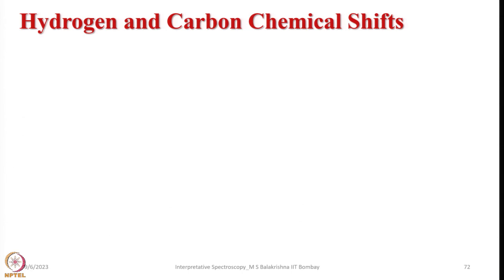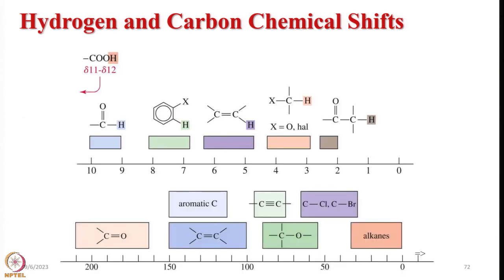Now let us look into hydrogen and carbon chemical shifts for better understanding. For comparison, I have given both 13C and 1H chemical shift ranges for the same functional groups. The aldehyde group and carbonyl group come around 9–10 ppm in 1H NMR whereas in 13C they come around 200 ppm. Olefinic hydrogen comes between 5–6 ppm whereas aromatic and olefinic carbons come between 100–150 ppm. A carbon bearing hydrogen and a halogen or oxygen comes around 3–4 ppm in 1H NMR and 50–90 ppm in 13C NMR, and alkanes come around 0–30 ppm in 13C NMR.